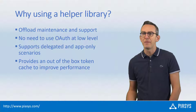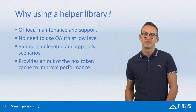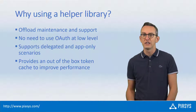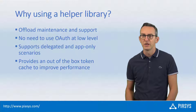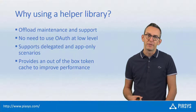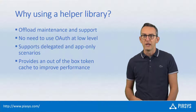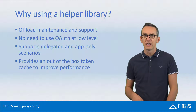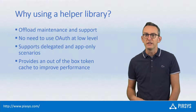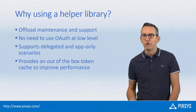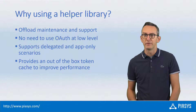Why should you use a helper library to get an access token to consume external APIs? First of all, using a helper library, you offload the maintenance and support of the authentication logic. Moreover, you don't need to dig into the details of the OAuth protocol, and you can easily get delegated access tokens or app-only access tokens. The MSAL library also provides a native cache for the retrieved tokens, so you can speed up the performance of your custom-developed application.